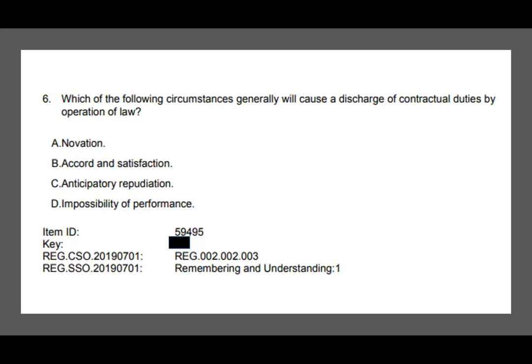Let's take a look at the first question: which of the following circumstances generally would cause a discharge of contractual duties by operation of law? Simply put, this is a business law question. They're asking us under what circumstances you don't have to perform — you are discharged of your contractual duties. But specifically, it says by operation of law. There are four different answers, and you have to understand them in order to apply them. This is closer to application level.